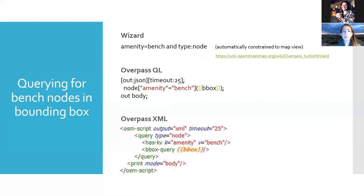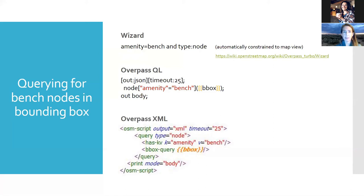The OverpassQL version is going to be: node, key-value of 'amenity=bench,' constraining it to the bounding box of the current canvas extent, and then it has the output. It also has settings at the top saying I want the data written in a JSON file, and I don't want this query to get hung up, so I'm putting a time limit of 25 seconds on it. This is being polite to the Overpass API. If you start building massive queries, you can put timeouts that are reasonable for the kind of data you're trying to get. You can also put max size settings to constrain the amount of data in one query.